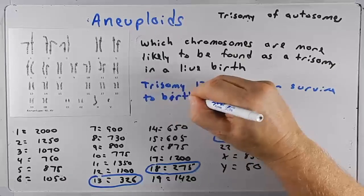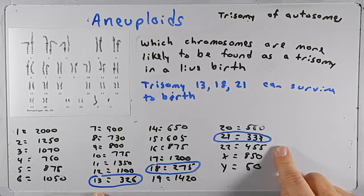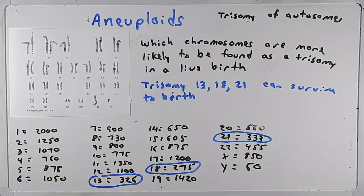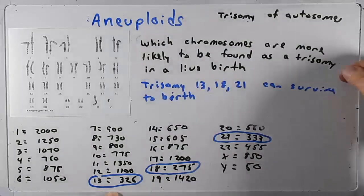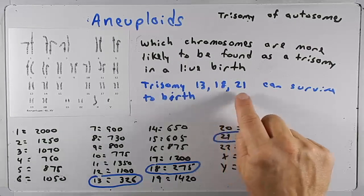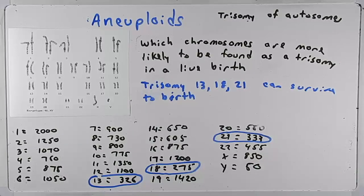Usually they don't survive — trisomy 13, three copies of 13, trisomy 18, and trisomy 21 usually die during embryonic or fetal development. The reason some do survive is because it's less likely that they're going to have a gene that causes a failed development. So chromosomes 13, 18, and 21 can survive because they don't have a lot of genes and the genes they do have are more likely to tolerate being a trisomy.